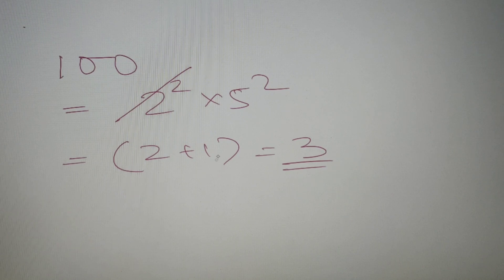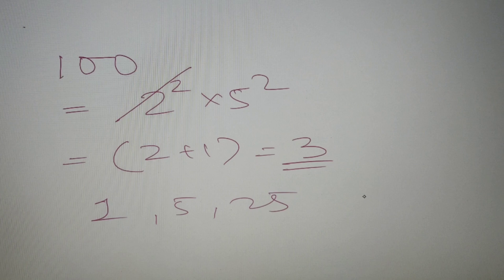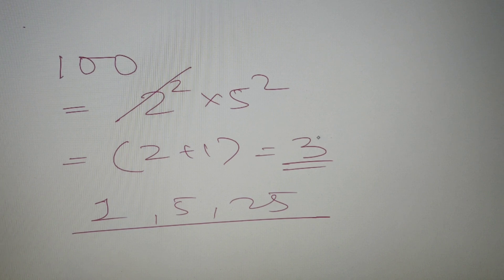We can cross-verify this: 1 is a factor of 100 and is odd, 5 is a factor of 100 and is odd, and 25 is also a factor of 100 and is odd. All 3 numbers are odd factors of 100, confirming that there are exactly 3 odd factors.